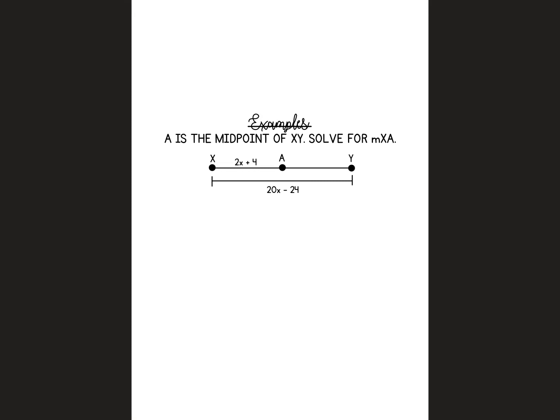This next one says A is the midpoint of XY. So if A is directly in the middle, I know that this is the same as this. So if this left piece is 2x plus 4, the right piece is also 2x plus 4. And then now this is just a segment addition problem. Remember, segment addition says part 1 plus part 2 equals the whole thing.